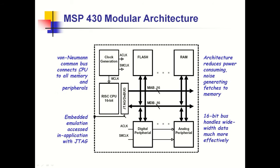MSP430 uses von Neumann architecture, meaning whether you interface program memory or data memory, the buses are common — there is only one address bus and one data bus for interfacing flash, RAM, and peripherals. Being a RISC controller, it has rich registers. Another unique feature is that despite being a low-cost, medium signal processor, it has a built-in JTAG emulator for testing and debugging.